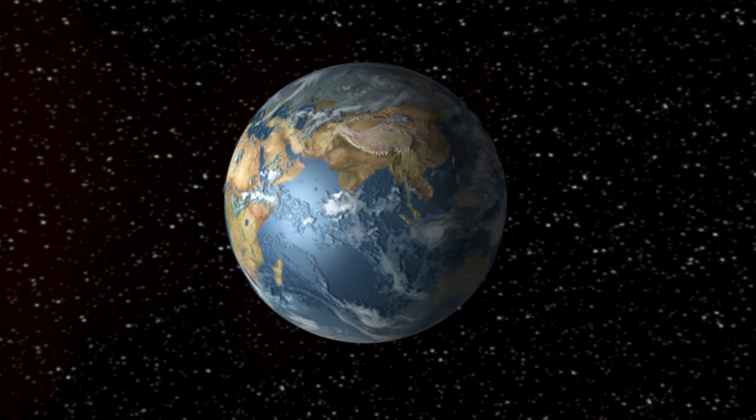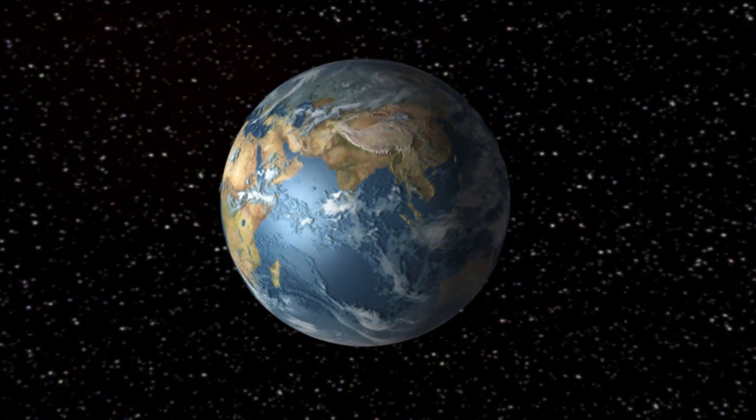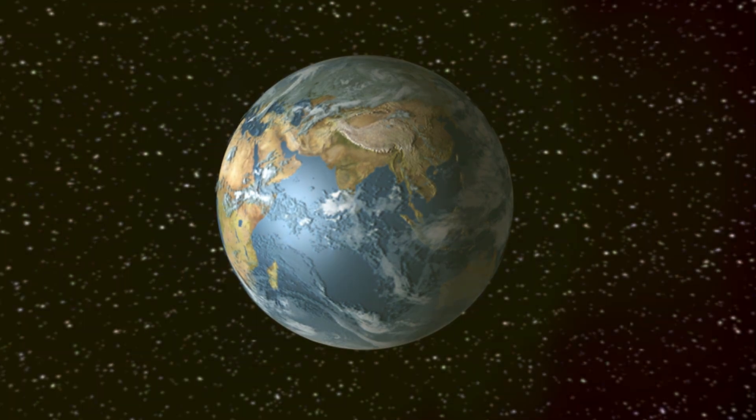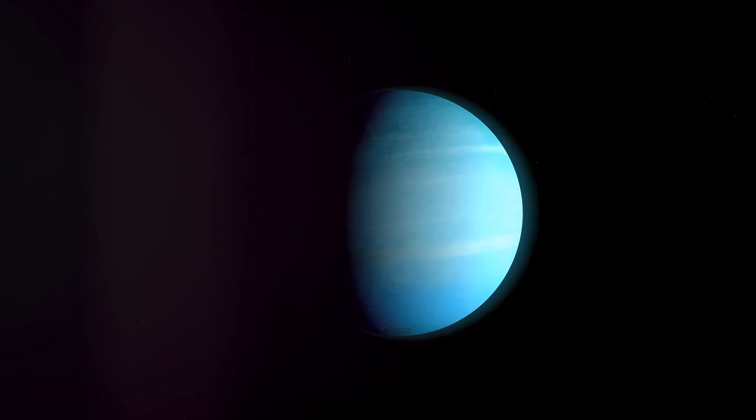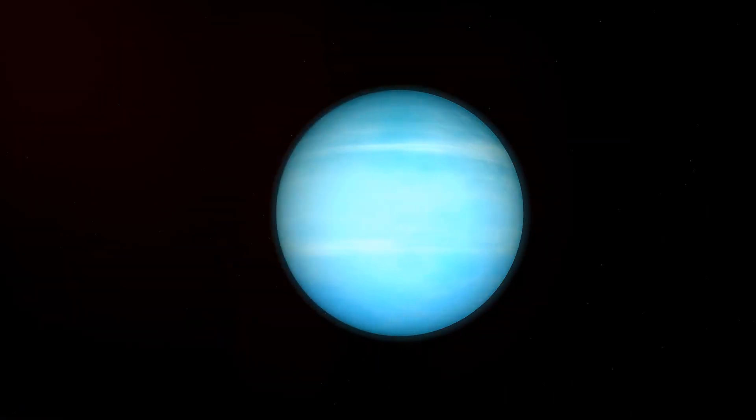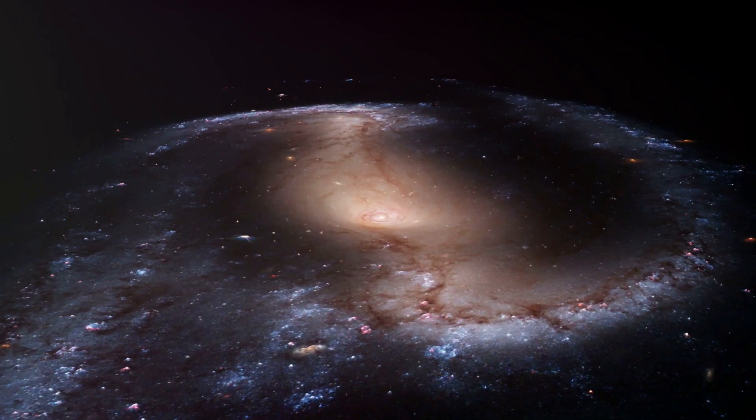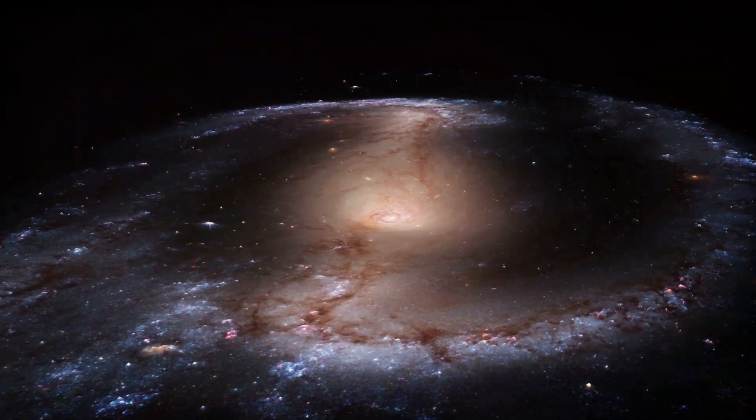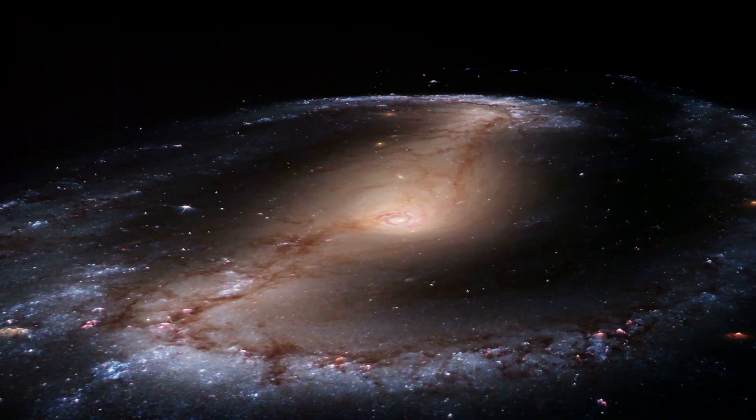These planets are not huddled together, but rather are separated by mind-boggling distances. For example, a journey from Earth to the furthest planet, Neptune, would take a spacecraft over 12 years, traveling at a speed of about 100,000 kilometers per hour. Yet, despite its vastness, our solar system is just a tiny speck in the grand scheme of the cosmos.